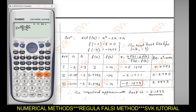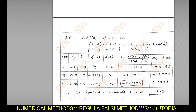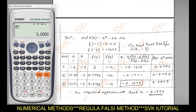Take out the calculator. Use the upper joystick to access the previous expression. Type f(x): Alpha colon, Alpha x (cube using shift x²) − 3·Alpha x + 4. Press Calc: A = −2, D = −14, B = −3, C = 2. Press equals to get x₁ = −2.1250. Press equals again to get f(x₁) = 0.7793.